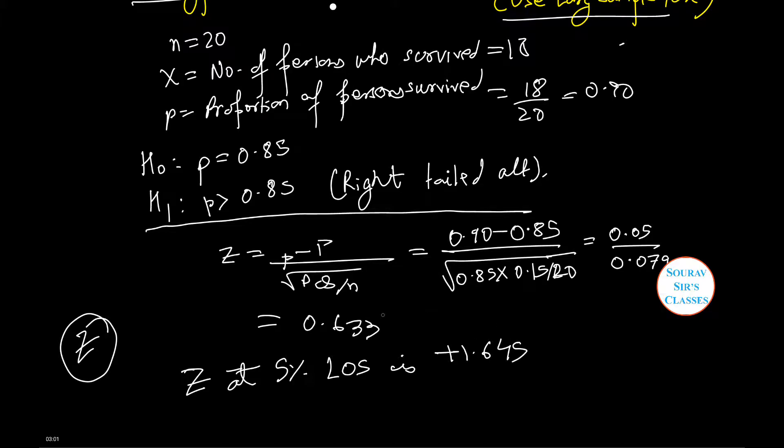Since the computed value of z equals 0.63 is less than 1.645, it is not significant, and we may accept the null hypothesis at 5% level of significance.